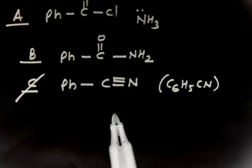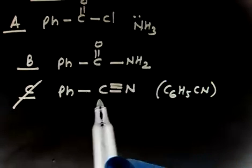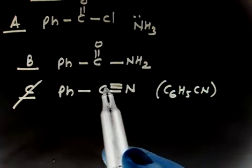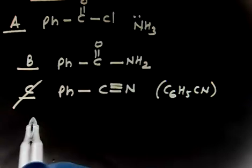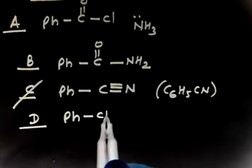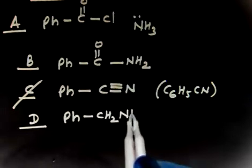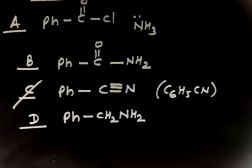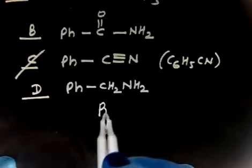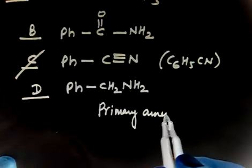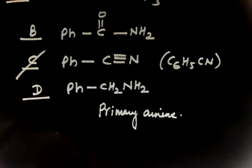Further, if you do reduction with H2/Ni, this triple bond will be added by hydrogen, so you will have CH2-NH2. The product D will be Ph-CH2-NH2. We'll get a primary amine, so final product is a primary amine.